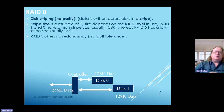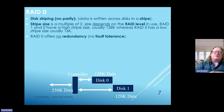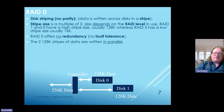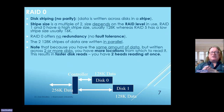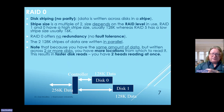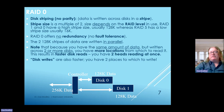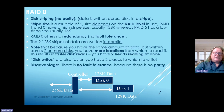RAID 0 offers no redundancy—redundancy is tied to fault tolerance. If a core element of your system fails, can you recover quickly, or do you have a mirror to carry the workload automatically? RAID 0 does not have that. The two 128K stripes are written in parallel, so you have more locations from which to read, resulting in faster disk reads, and disk writing is also faster. The disadvantage is no parity and no fault tolerance.